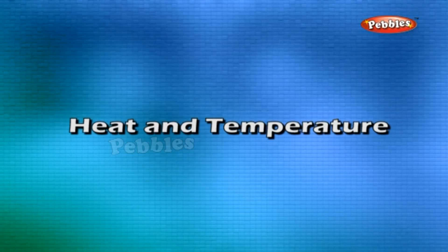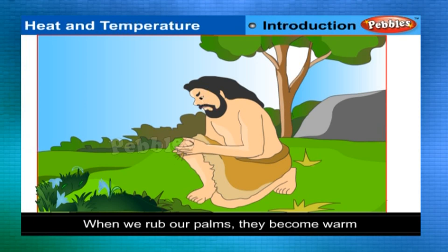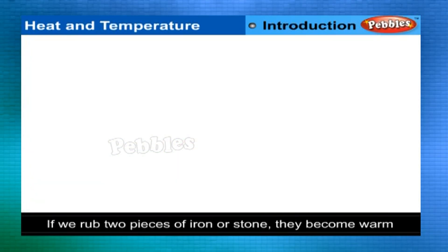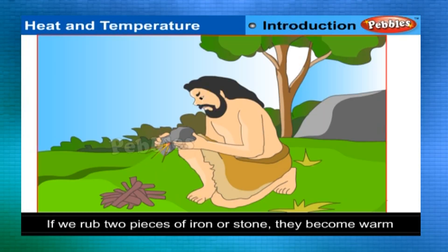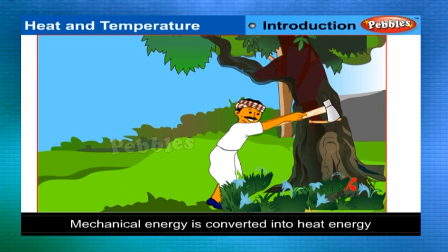Heat and Temperature — Introduction. When we rub our palms, they become warm. If we rub two pieces of iron or stone, they become warm. The saw used for cutting wood becomes warmer during action. In all these cases, mechanical energy is converted into heat energy in overcoming friction. Heat can also be converted into other forms of energy.